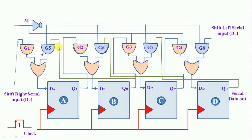The AND gate outputs are connected to OR gates. The OR gate outputs are connected to DA, DB, DC, and DD respectively. The first flip-flop output is connected to G2, the second flip-flop output is connected to G3 and G5, the third flip-flop output is connected to G4 and G6, and the fourth flip-flop output is connected to G7. G1 has the right serial input, and G8 has the shift left serial input.